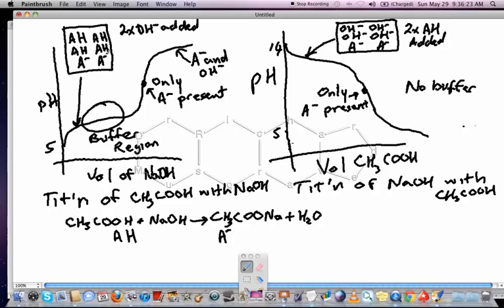So after we've added two OH-'s, we'll have four AH's (four of the original six), and two of the AH's will turn into A-'s. Remember that the sodium hydroxide gets destroyed by the acetic acid. The AH reacts with the OH- to form A-.